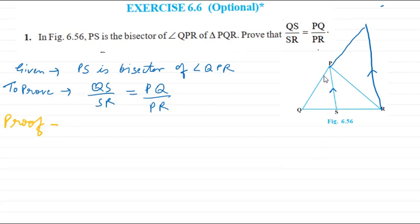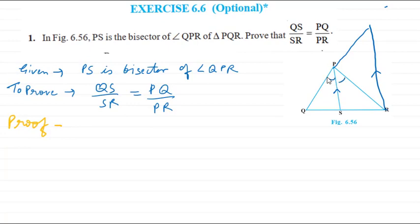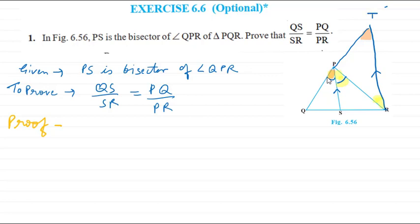Since PS is the bisector, these two angles are equal. Now, if those two are equal, the alternate angles will also be equal. Looking further, the corresponding angles will also be equal. Since opposite angles are equal, we can say that side TP will be the same as PR.